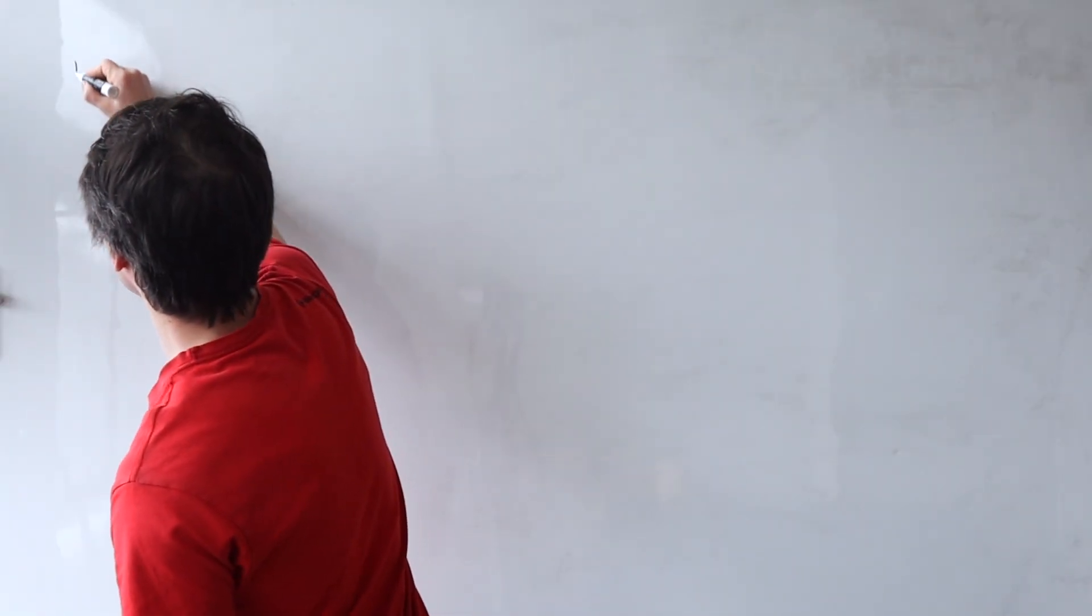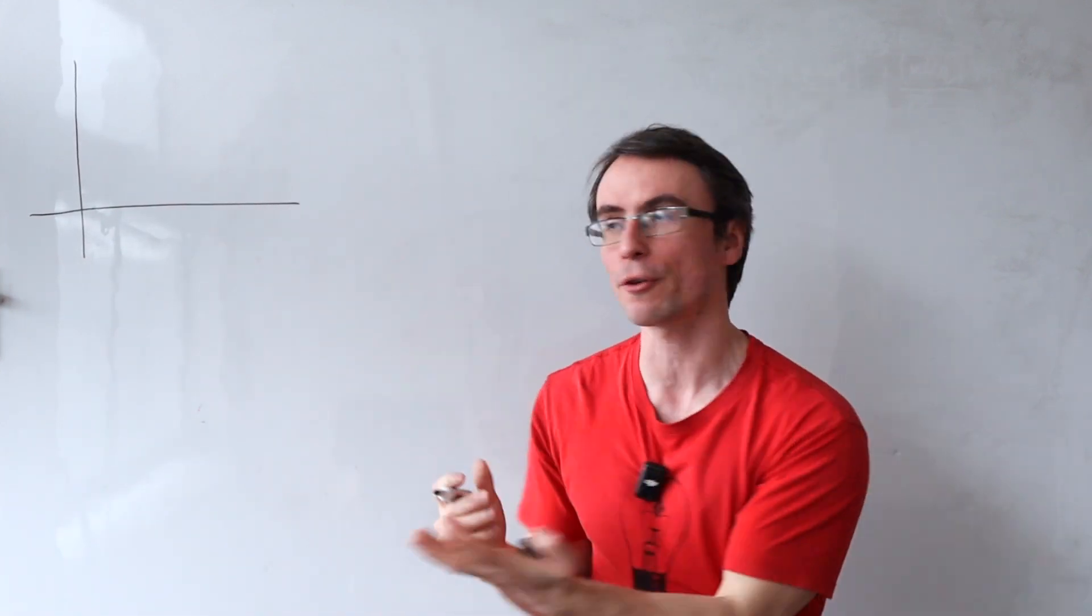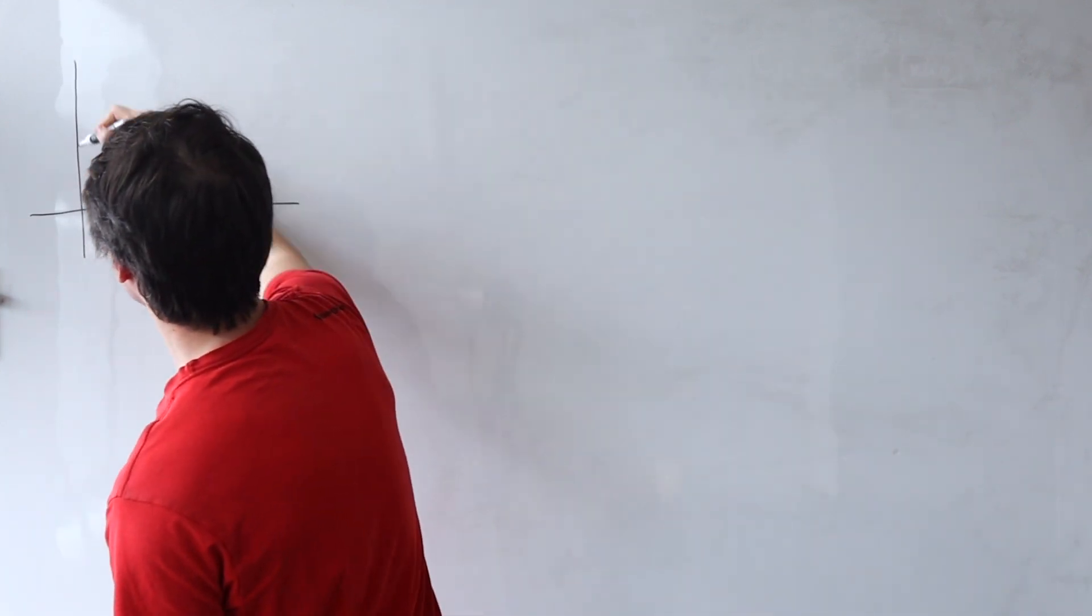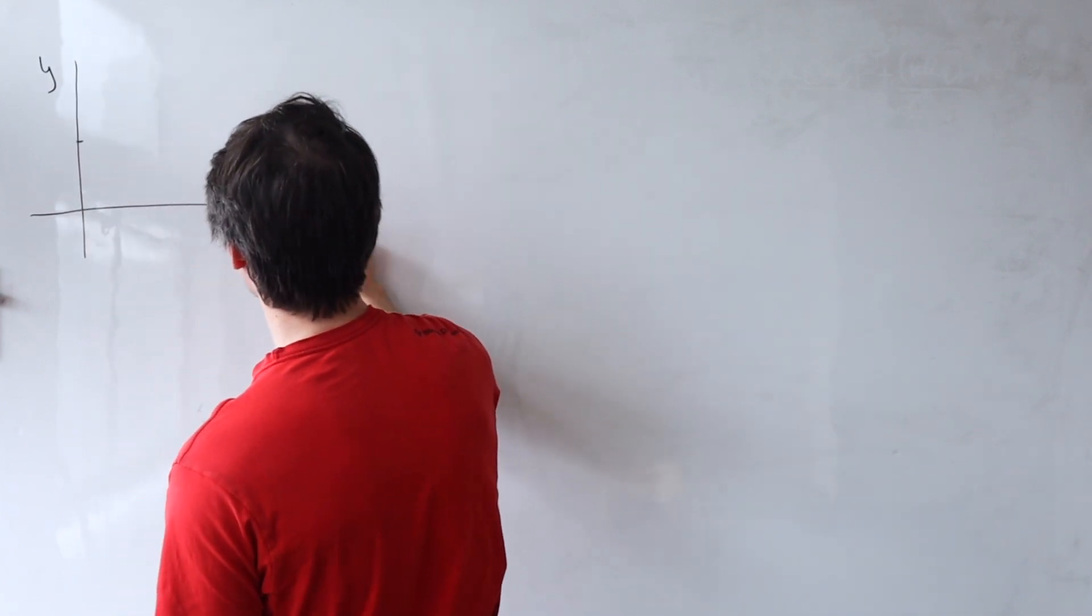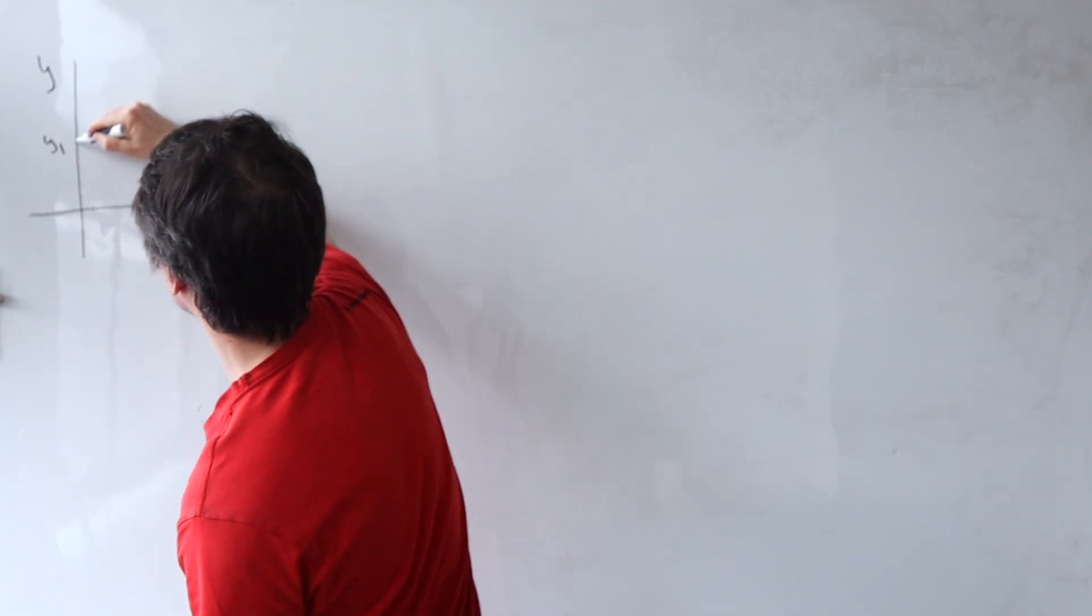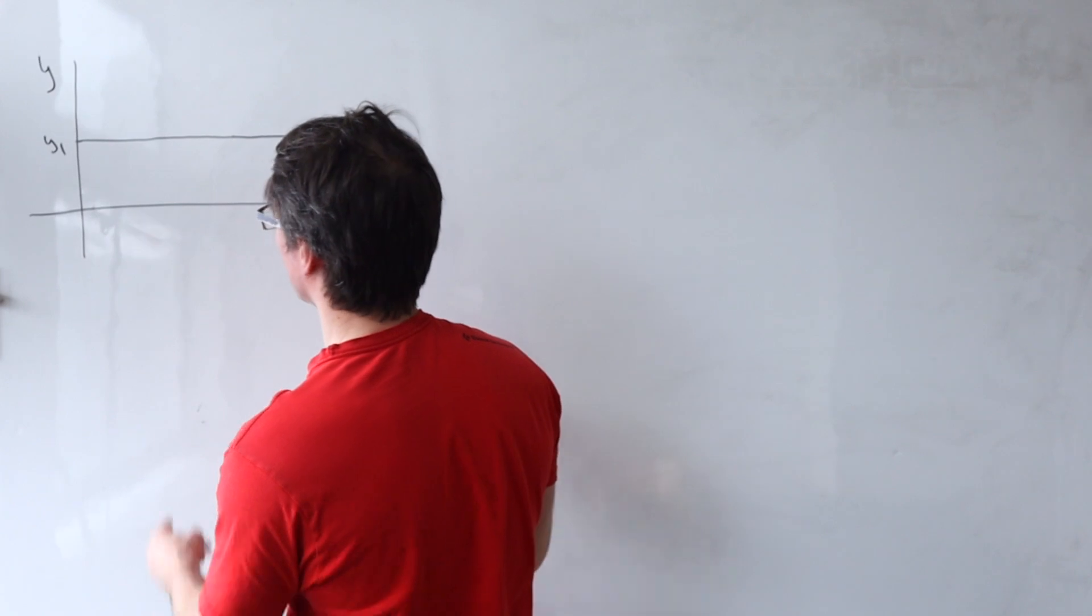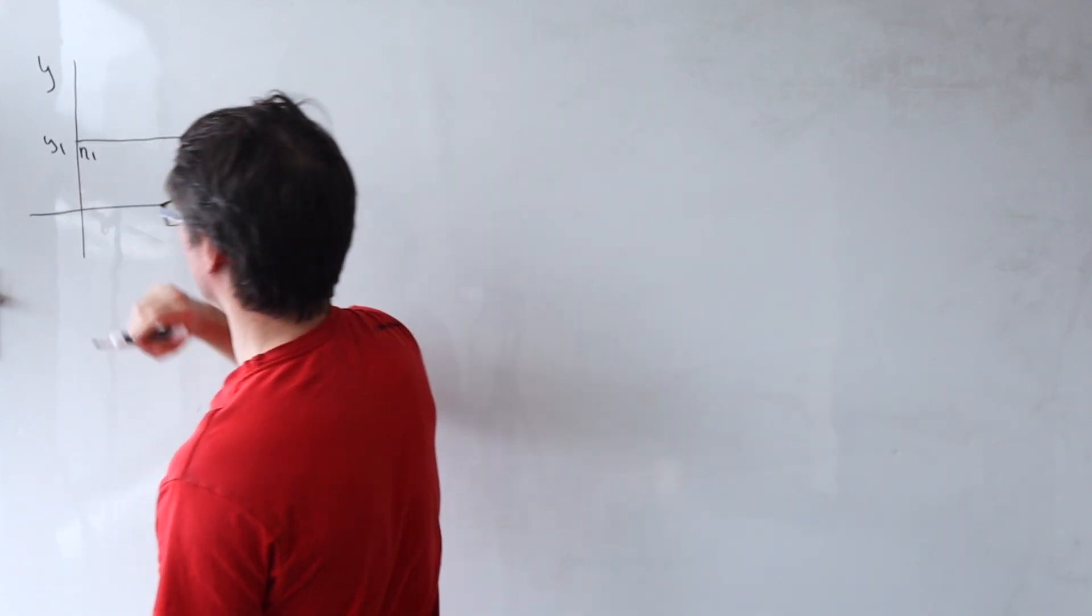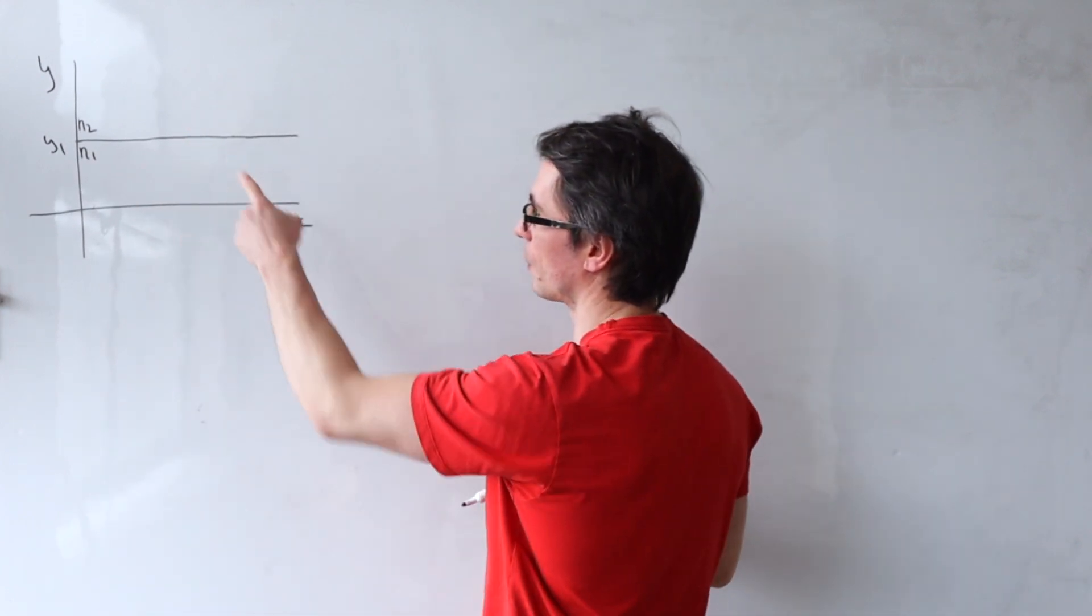Imagine that I have a couple of substances with different refractive indices. So let's say that we have y against x and this here I'm going to call this y1 and that's going to be the boundary between those two substances. This one here will have a refractive index of n1 and this one here will have a refractive index of n2.